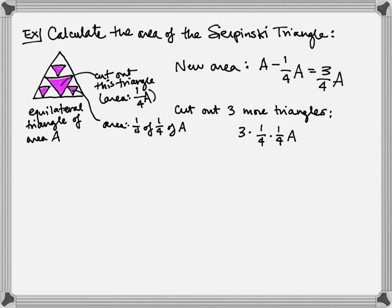I did that three times. So when I cut out three more triangles, all three of them together have area three times a fourth times a fourth times A. And so if we're calculating our total area at this point, we take A minus one-fourth A minus three times one-fourth times one-fourth times A.